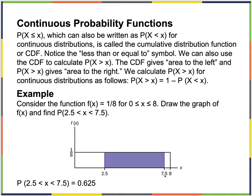For the probability of X between 2.5 and 7.5: 7.5 minus 2.5 is 5, times 1/8 is 5/8, which is 0.625. Alternatively, using the CDF: probability less than or equal to 2.5 is 2.5 divided by 8, probability less than or equal to 7.5 is 7.5 divided by 8. Subtracting those two probabilities gives the same answer.